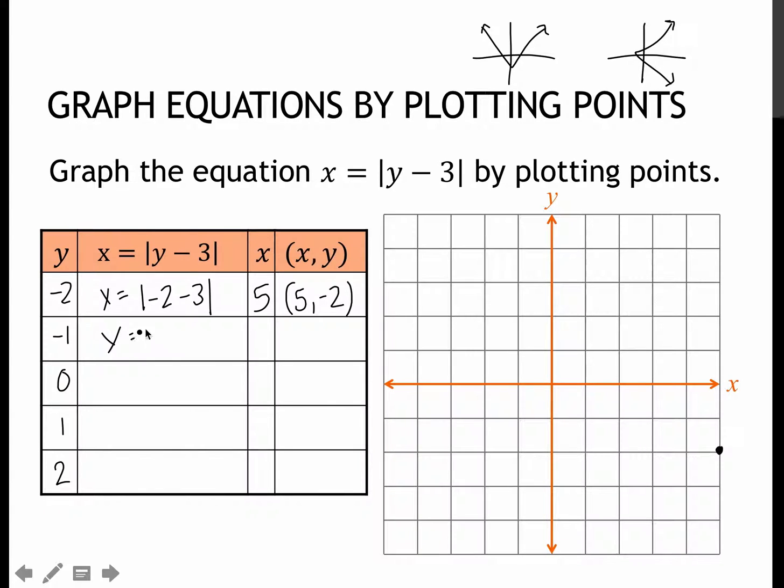Plugging in negative 1. Negative 1 minus 3 is negative 4. Absolute value makes it positive 4. So again, x, y would be 4, negative 1.